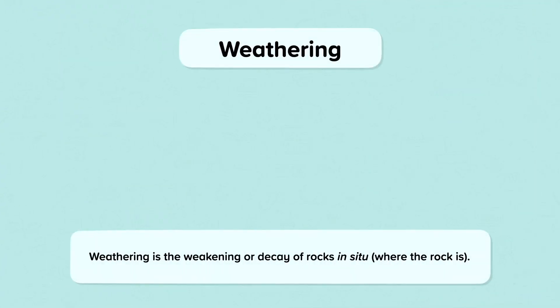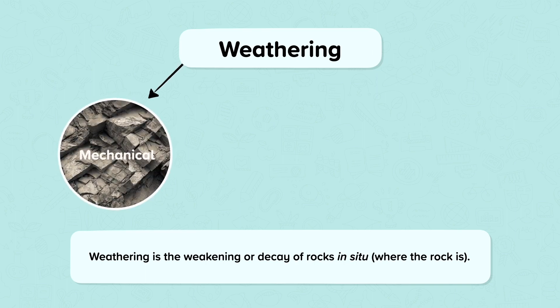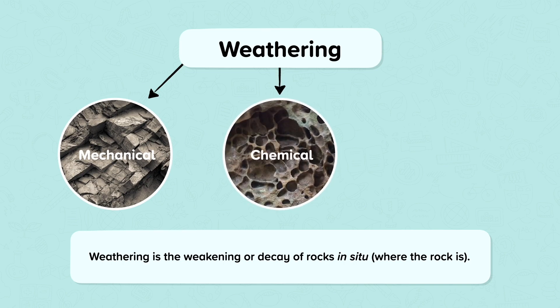Weathering is the weakening or decay of rocks in situ, or where the rock is. There are three types of weathering: mechanical weathering, which can also be known as physical weathering, chemical weathering, and biological weathering.